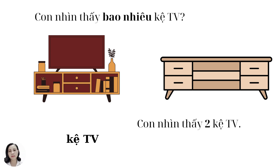And then, kệ tivi. Kệ tivi. Easy, right? Kệ tivi is the one you can put your tivi on it, right. Con nhìn thấy bao nhiêu kệ tivi? Can you answer my question? Yes, of course. Easy, right? Con nhìn thấy hai kệ tivi.